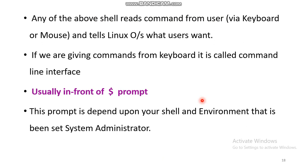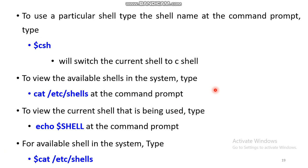The shell reads commands from the user through the keyboard or mouse and tells the Linux operating system what the user needs. If commands are given from the keyboard, it is called the command line interface. Commands are usually given at the dollar prompt, which denotes you are in the shell environment set by the administrator. To switch to a particular shell, type the shell name at the command prompt — for example, type 'csh' to switch to C shell. To view all available shells in the system, type 'cat /etc/shells' at the command prompt.